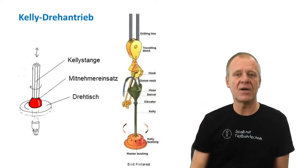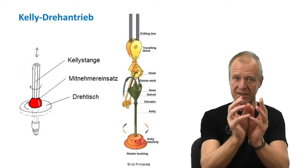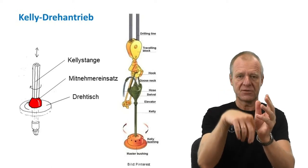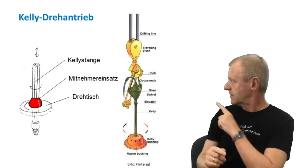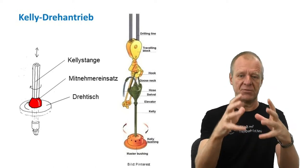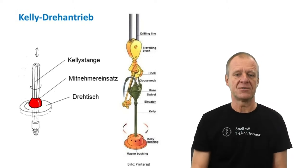On this picture, we can see in detail how everything works together. On the hook of the pulley system in the derrick hangs the swivel, through which the drilling mud passes from a high-pressure hose into the rotating drill string. The Kelly rod is screwed with its upper end onto the swivel and leads down to the Kelly bushing, into the rotary table, and to the top end of the drill string.